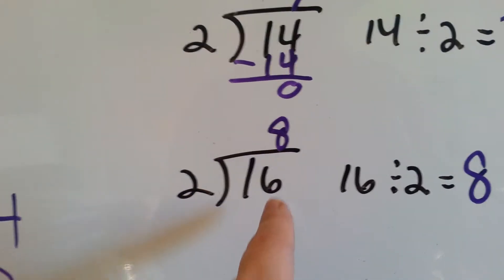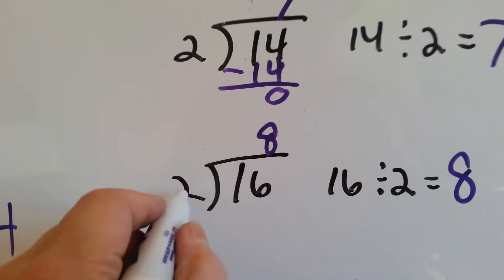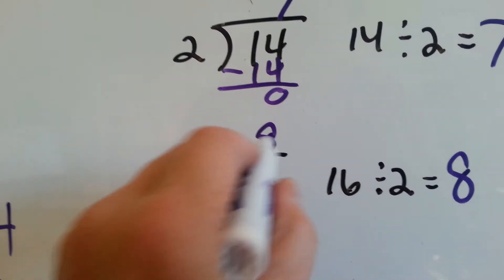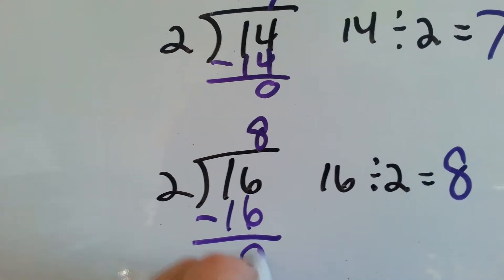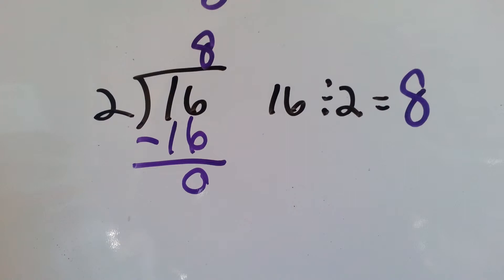And again, we put the 8 above the 6 to let everyone know that we use the entire 16. 2 times 8 is 16. We do our subtraction and we've got 0 left over.